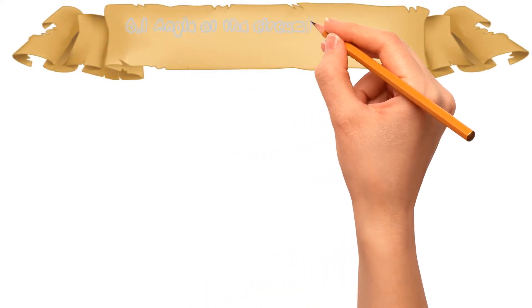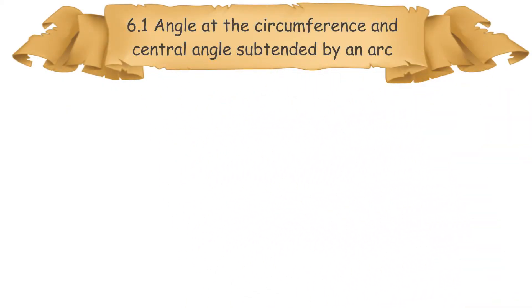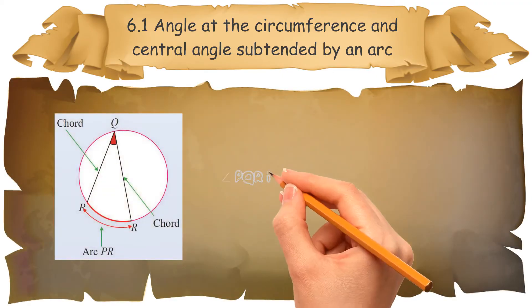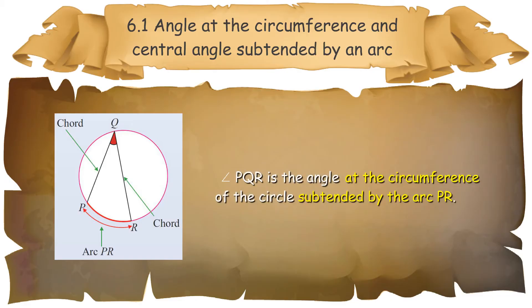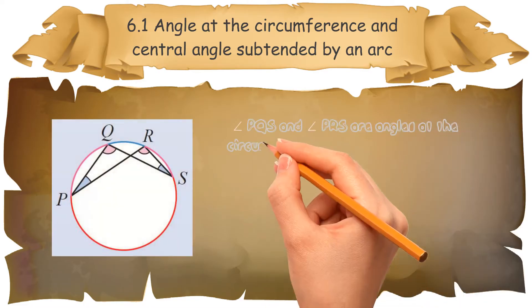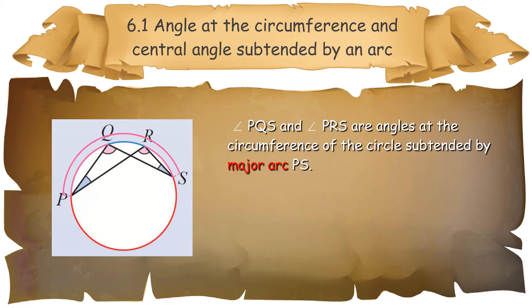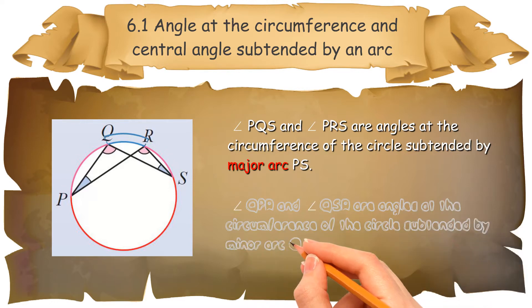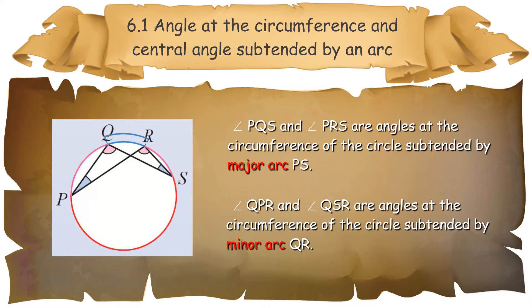6.1 Angle at the Circumference and Central Angle subtended by an arc. Angle PQR is the angle at the circumference of the circle, subtended by an arc. Angle PQS and Angle PRS are angles at the circumference subtended by Major Arc PS. Angle QPR and Angle QSR are angles at the circumference subtended by a minor arc.